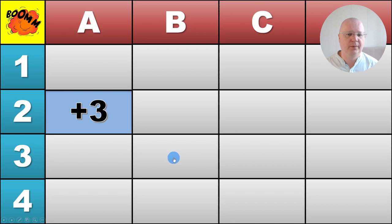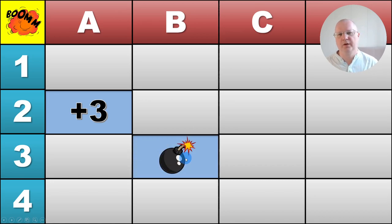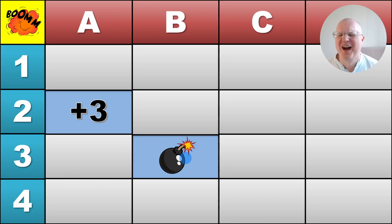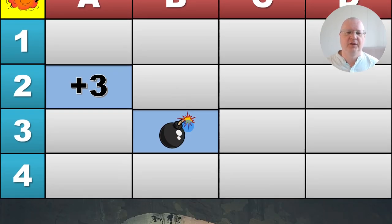For example, B3 — there we go, it's a bomb! I'm sorry, you lose five points.